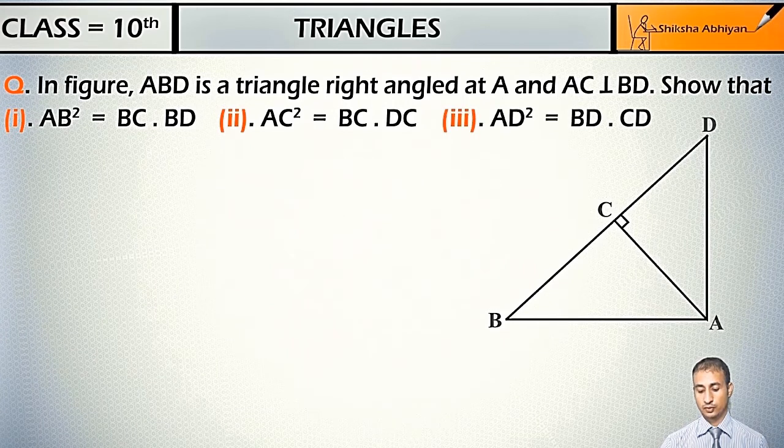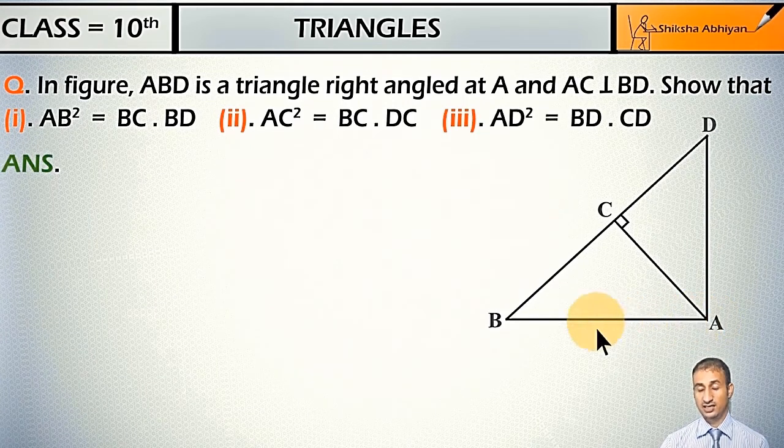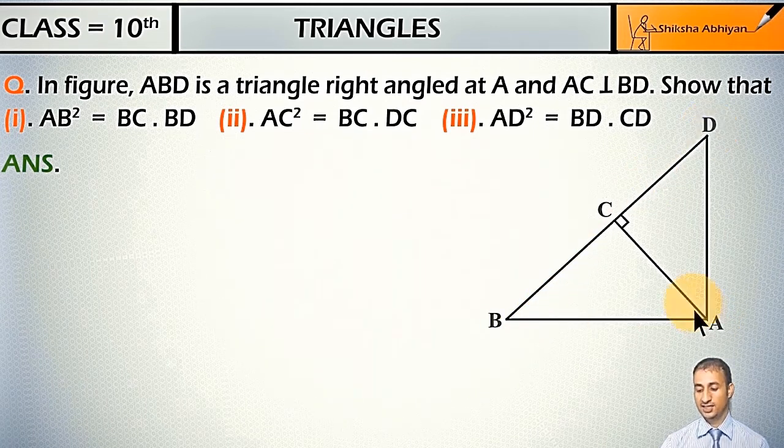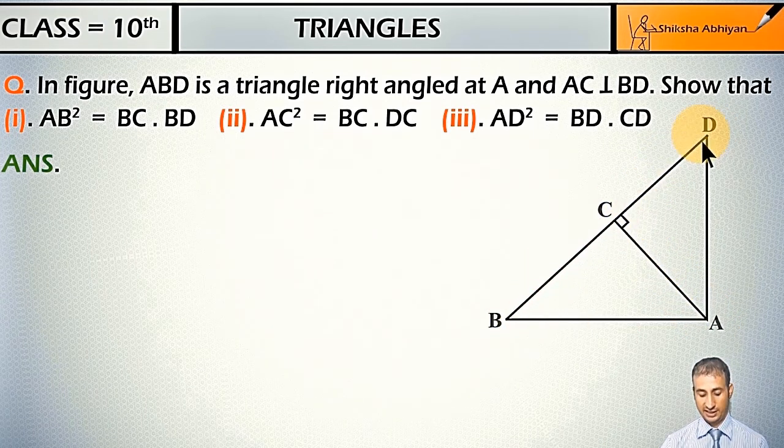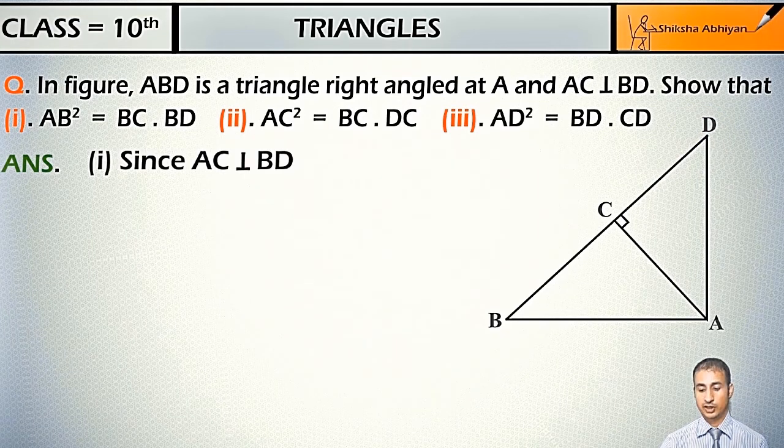Student, here we are given ABD is a right angle at A and AC perpendicular is drawn on side BD. Now student, for the first part, since AC is perpendicular to BD...